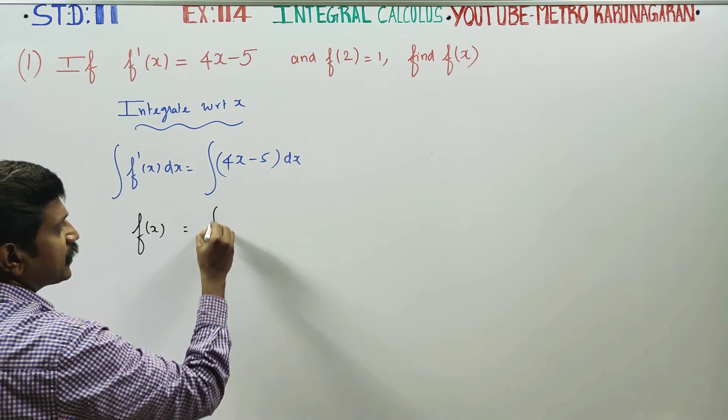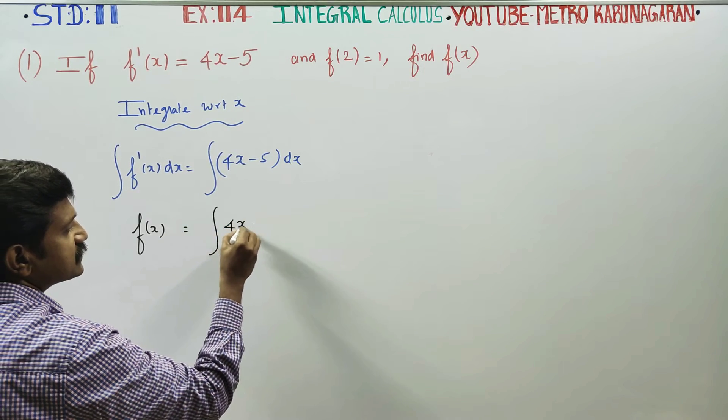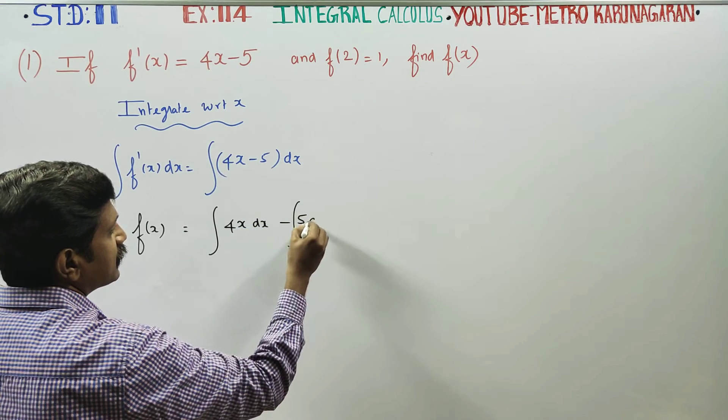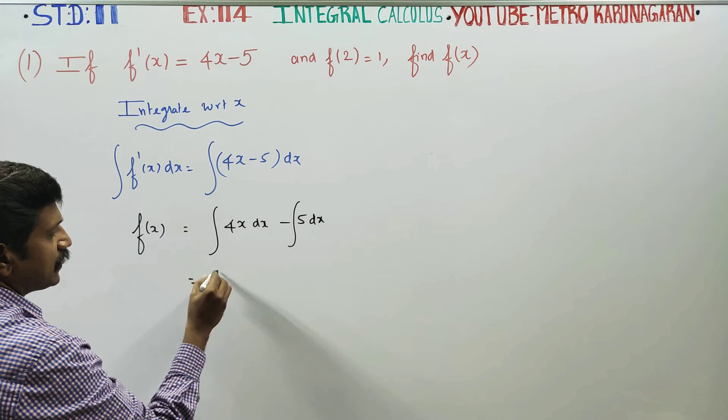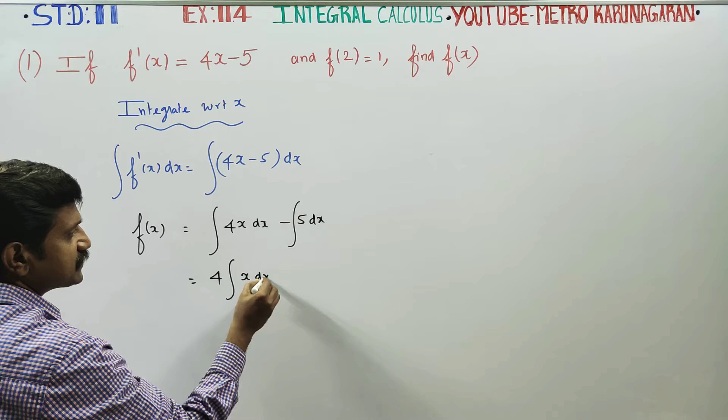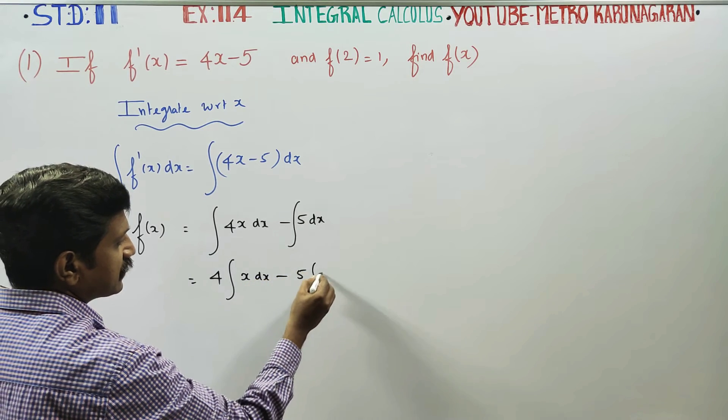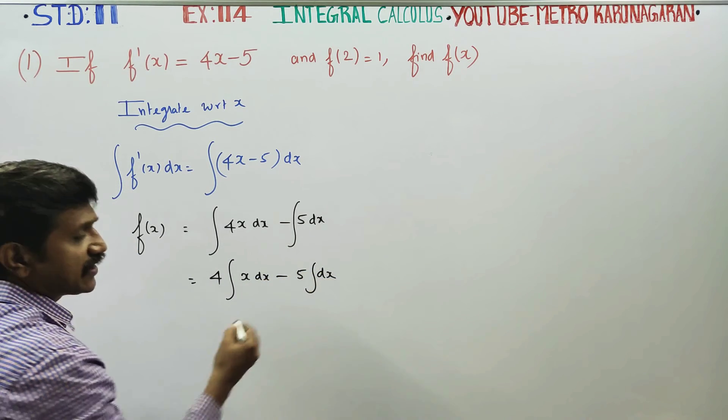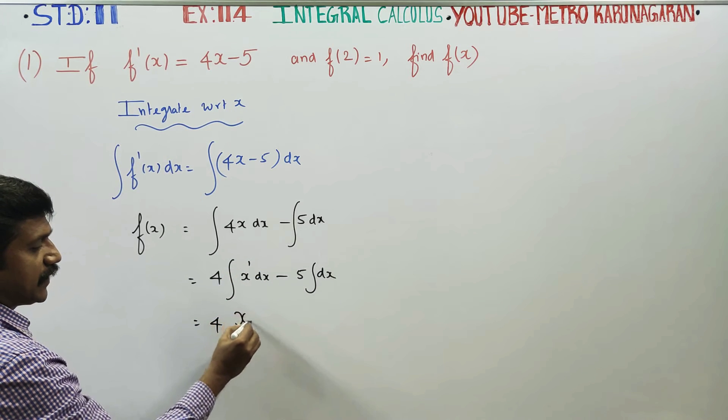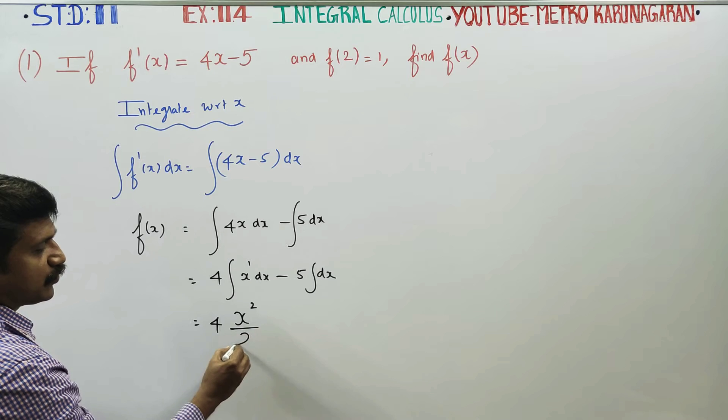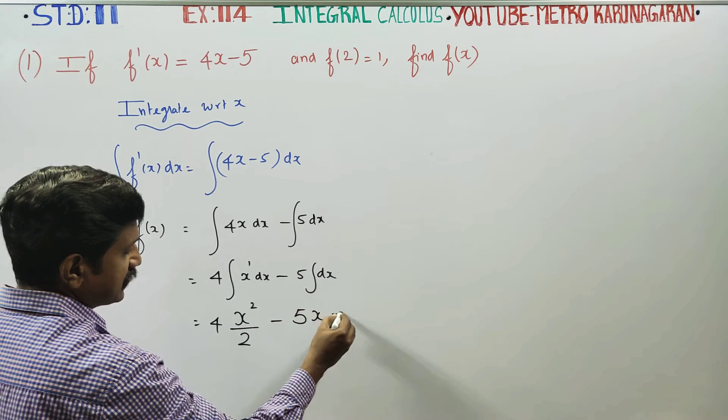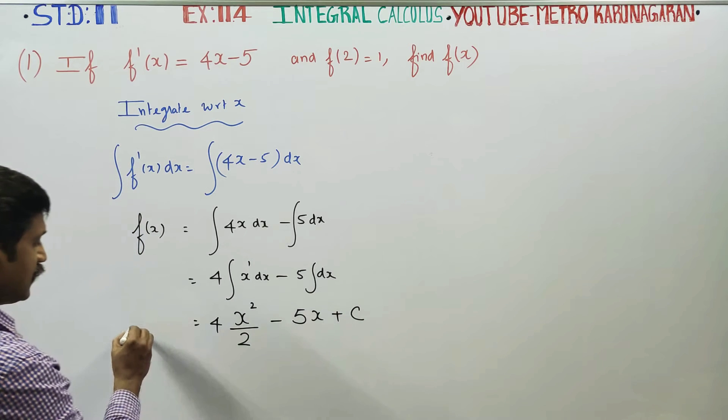In the integration, we separate: integral of 4x dx minus integral of 5 dx. Applying the power rule, the power increases by 1 and we divide by the new power. This gives f(x) = 2x² minus 5x plus C.